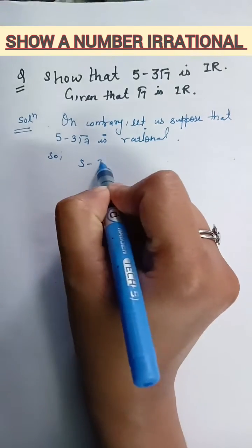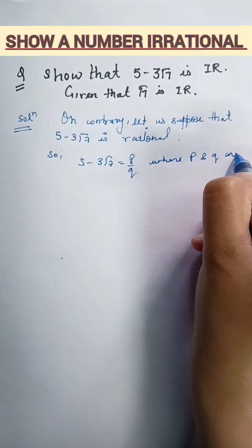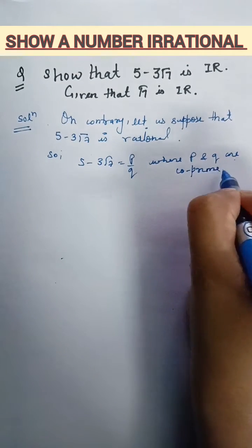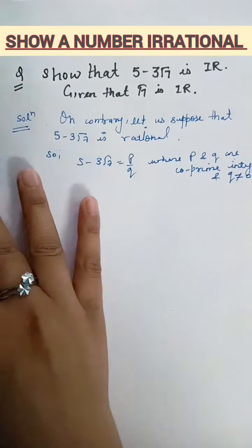So, 5 minus 3 root 7 can be written as of the form p upon q where p and q are co-prime integers and q should not be 0.